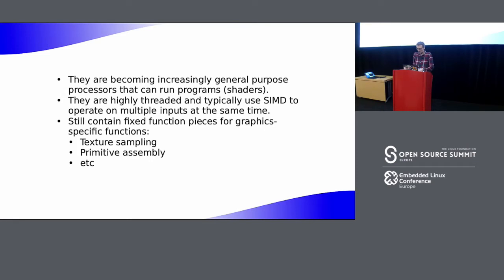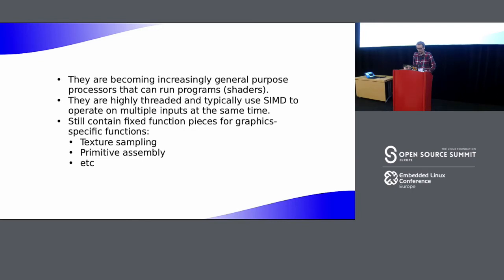The GPU can run arbitrary programs, but they're specialized and different from programs on the CPU, because the GPU is designed to be highly threaded — it can operate on multiple inputs at the same time. Each of those threads also uses SIMD, single instruction multiple data. So you can have many cores and many threads running simultaneously, each doing, for example, the equivalent of 16 operations at a time, whereas a CPU might have four cores doing one operation per instruction.